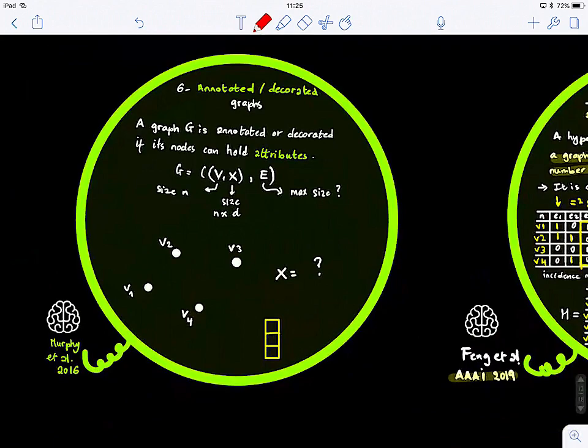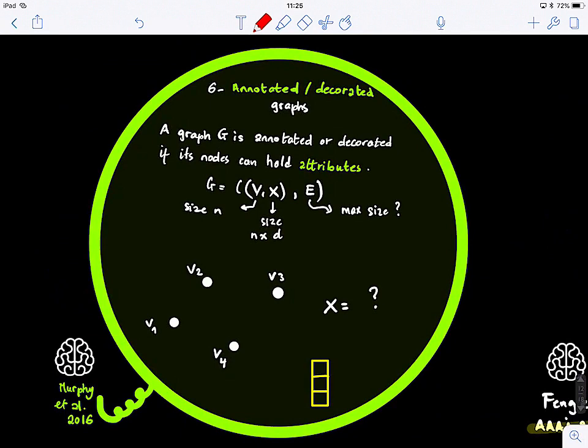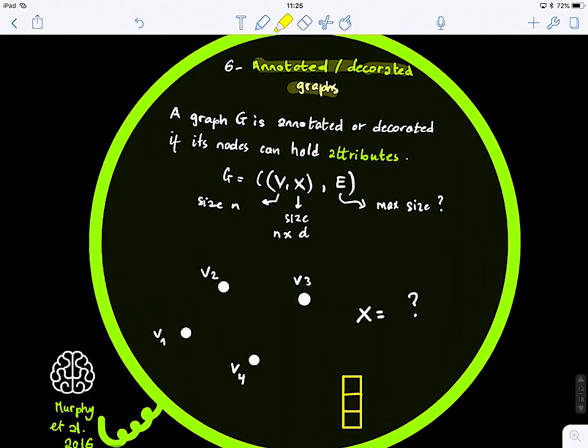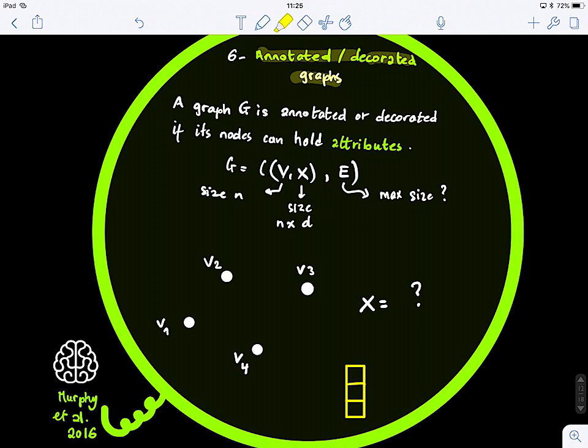Now, there is another thing which is also very cool. And it's not commonly used, I think. Which is the concept of what we call an annotated or decorated... Annotated decorated graphs. So, so far, all our nodes, they are just nodes. Okay? They can represent, for example, a node can represent one item. A city, it can represent a person, like a brain, whatever. Okay? Now, when we have an annotated or decorated graph, it means that its nodes can hold attributes. And this is commonly used also in geometric deep learning.